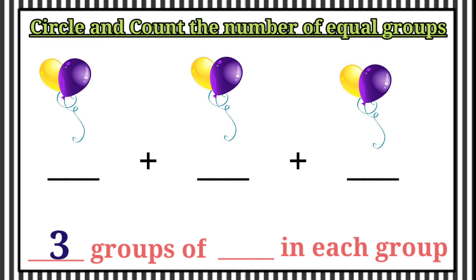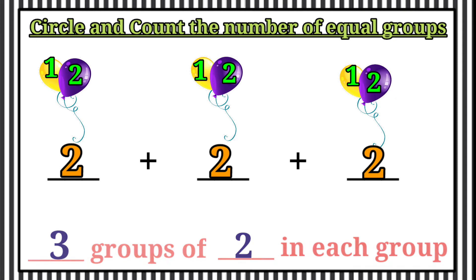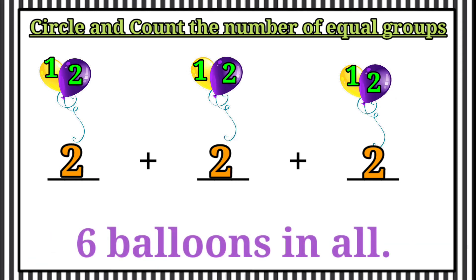Now we are going to count how many in each group. 1, 2, 3, 4, 5. Here 2 in each group. So, therefore the answer is 6 balloons in all.